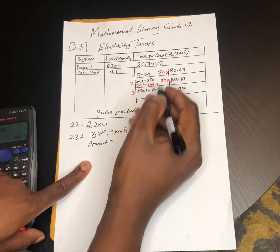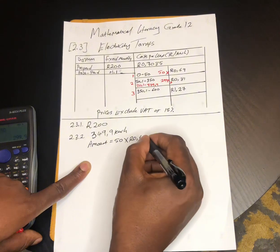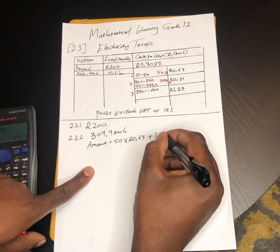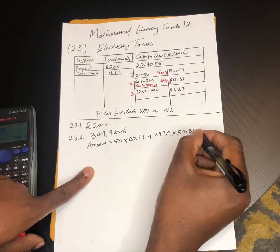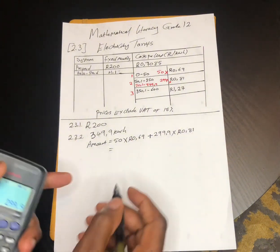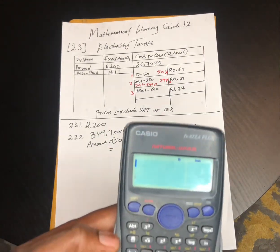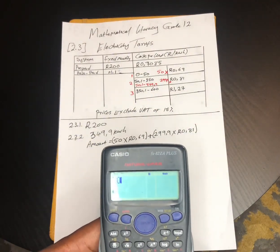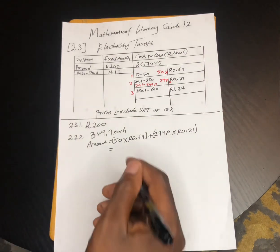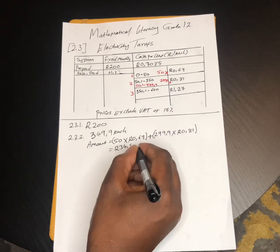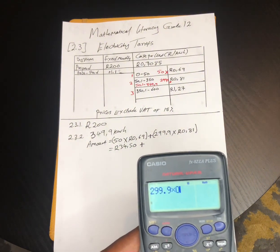The amount to be paid is calculated as: 50 multiplied by 0.69, plus 299.9 multiplied by 0.81. The first bracket: 50 × 0.69 = 34.50. The second bracket: 299.9 × 0.81 = 242.919.